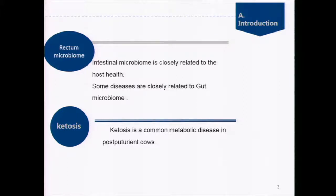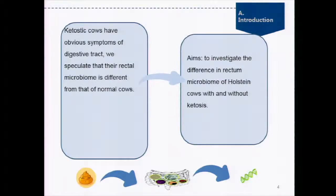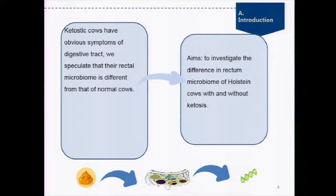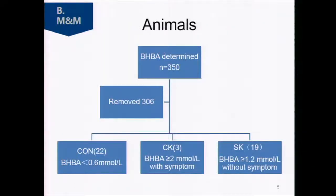A. Introduction. Intestinal microbiome is closely related to host health, and some diseases are closely related to gut microbiome. Ketosis is a common metabolic disease in postpartum cows. Ketosis cows have obvious symptoms of the digestive tract. We speculate that their rectal microbiome is different from that of normal cows. Our aim is to investigate the difference in rectal microbiome of Holstein cows with and without ketosis.